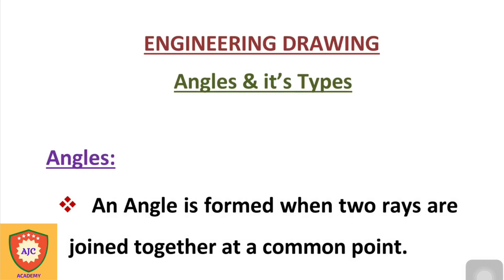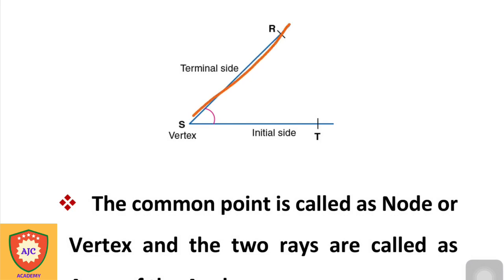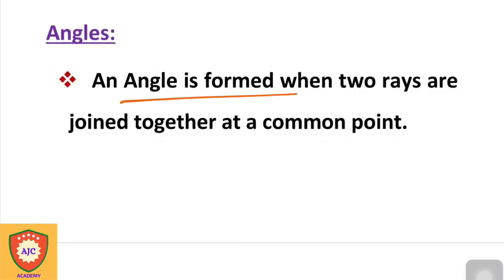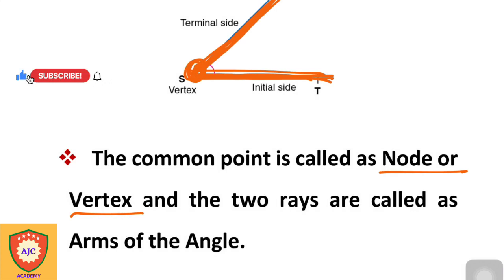An angle is defined as the figure formed when two rays are joined together at a common point. The two rays are the arms of the angle, and the common point where they meet is called the node or vertex.